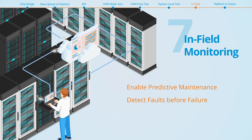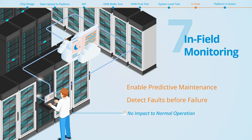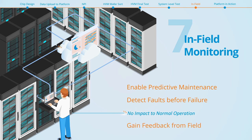Such predictive maintenance activities can initiate returns from the field, return merchandise authorizations, but now without the damages associated with a failure. The agents pinpoint the cause of failures and determine if they are device failures or system related problems originating outside the device. Since everything is available in the platform, it takes milliseconds rather than months to isolate failures, accelerating failure analysis using fewer resources and ultimately saving costs and protecting your customer relationships.